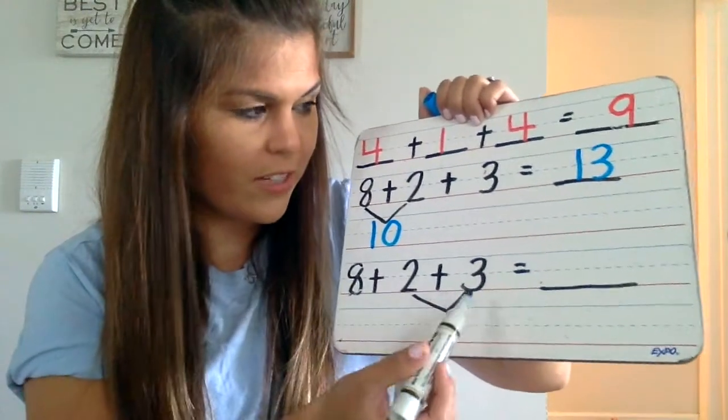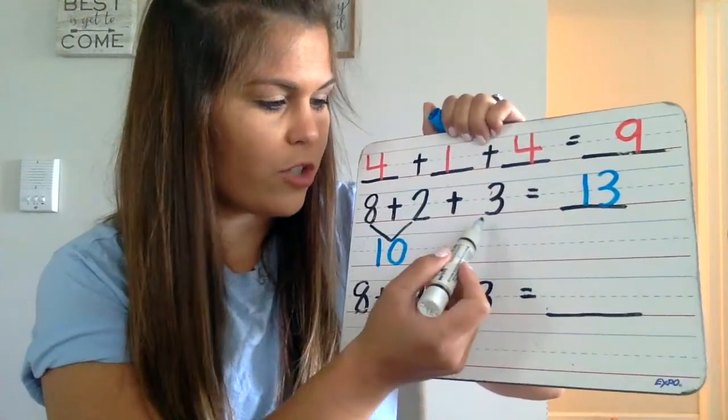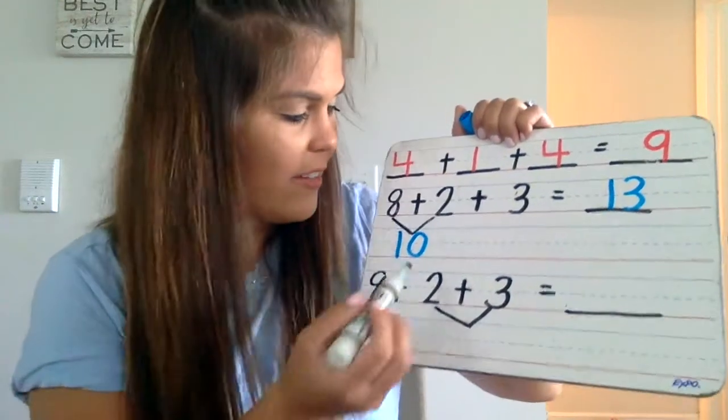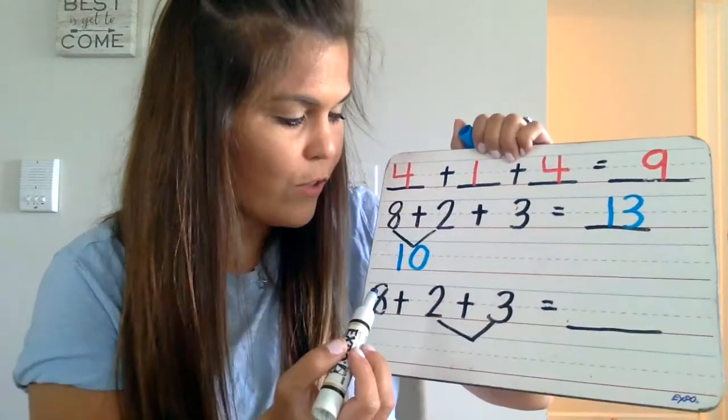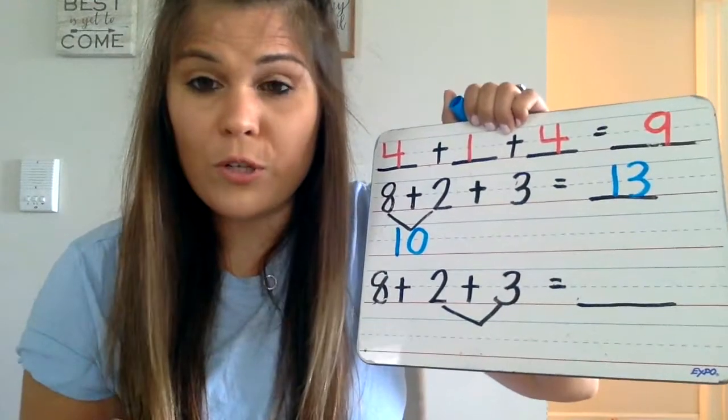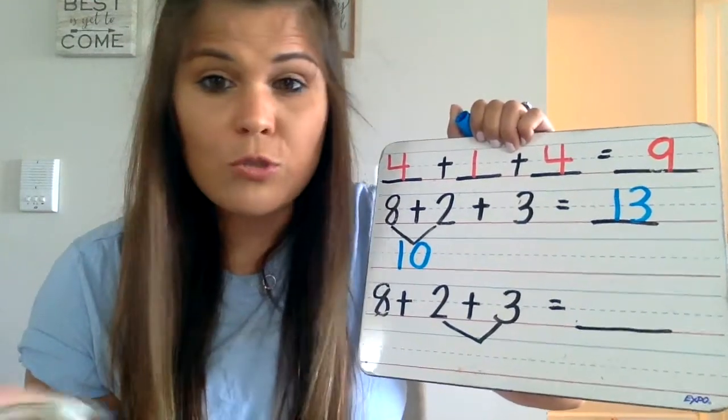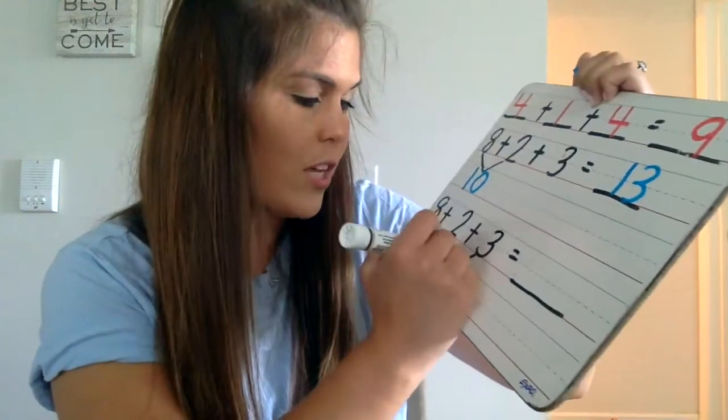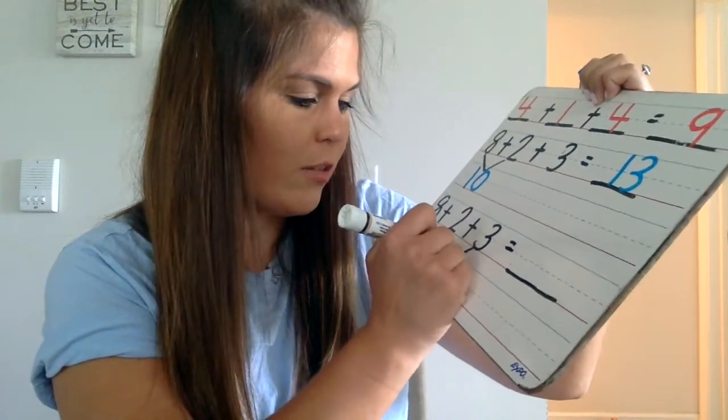Let's do another example down here. I have the same equation, but this time, instead of adding eight plus two first, I decided to add two plus three first. So you're just going to find whichever two numbers you want to add first.